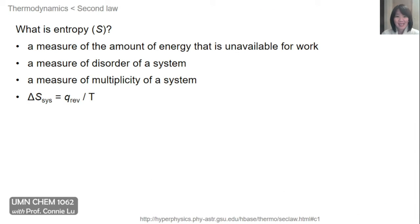Before we discuss the second law of thermodynamics, let's talk about the many definitions of entropy that are all related. Entropy is sometimes defined as a measure of the amount of energy that is unavailable for work. It can also be a measure of the disorder of a system, or the multiplicity of a system, and in a very specialized case of a reversible process, the entropy change can be related to the heat of that reversible process divided by the temperature.